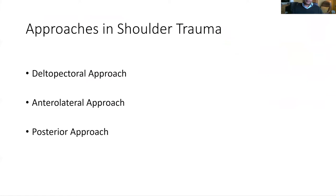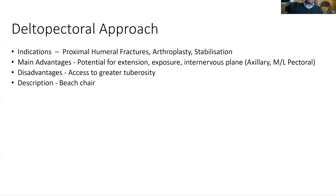Moving on to approaches in shoulder trauma, the more common ones are the deltopectoral and anterolateral approaches. The posterior approach is less common, but we still need to discuss it as it could come up in the exam. The deltopectoral approach is the workhorse — used to fix proximal humerus fractures, perform arthroplasty, or stabilization procedures. Its main advantage is the potential for extension distally, as it provides good exposure and utilizes an internervous plane between the axillary and medial lateral pectoral nerves supplying the deltoid and pec major. The main disadvantage is access to the greater tuberosity — going from the front while the greater tuberosity is attached to the posterior superior cuff and displacing posteriorly can sometimes be a challenge.